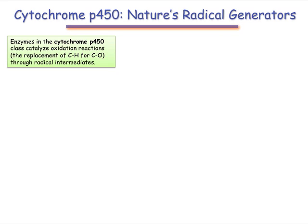Much of our body's ability to process an enormous variety of chemicals depends on the action of cytochrome enzymes, which transform organic compounds so that they can be disposed of by the body or used as building blocks. In particular, the cytochrome P450 enzymes catalyze a wide variety of oxidation reactions through radical intermediates.